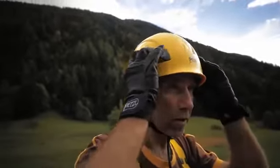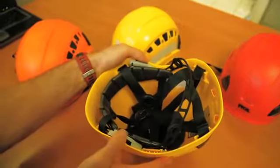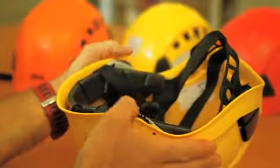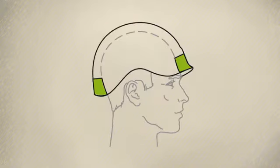The side adjustment wheel makes headband adjustment easy. Thanks to the center fit system, the wheels act simultaneously on the front and back of the headband. This centers the helmet ensuring good balance and excellent fit.